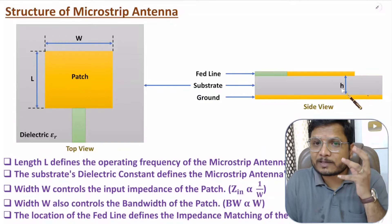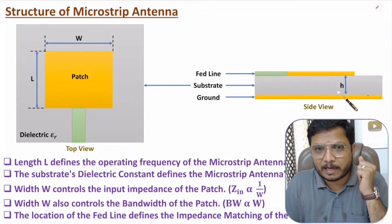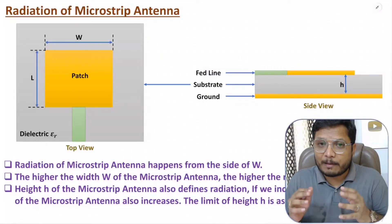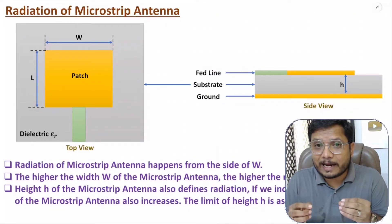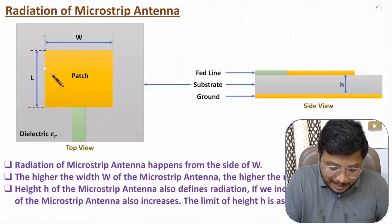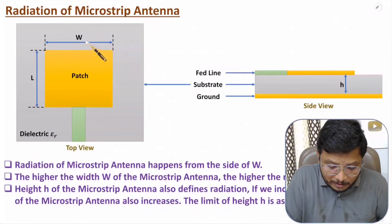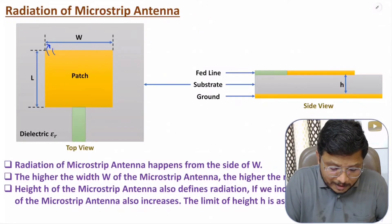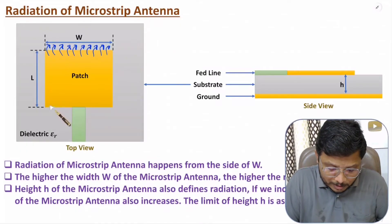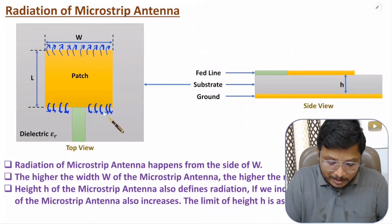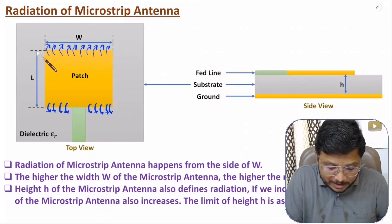Height h also plays a very essential role, which I'll explain in the radiation mechanism. Radiation of microstrip patch happens from the side of width W — it does not radiate from the side of length L. The sides associated with the width of the patch are where radiation occurs, so microstrip antenna radiates at the sides of W, not at the sides of L.